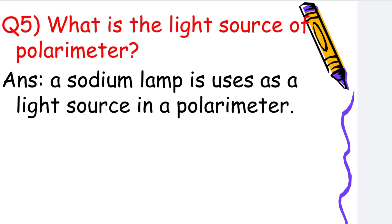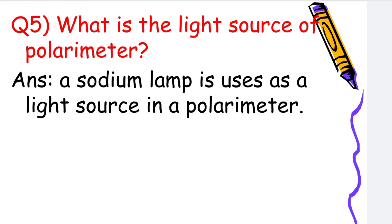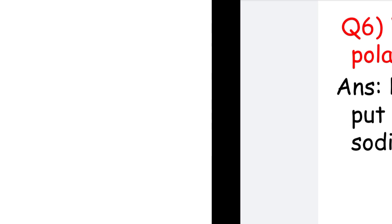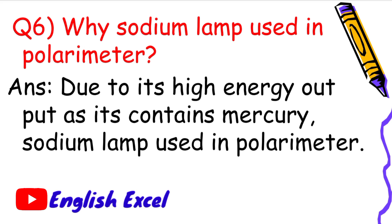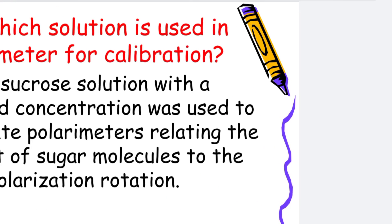What is the light source of a polarimeter? A sodium lamp is used as a light source in a polarimeter. Why is a sodium lamp used in a polarimeter? Due to its high energy output, a sodium lamp is used in the polarimeter.